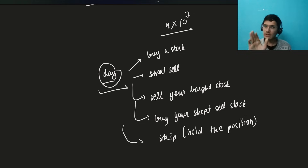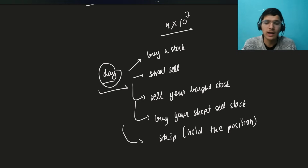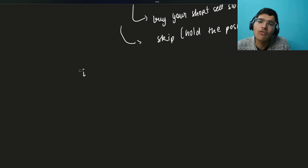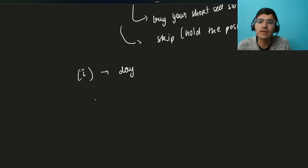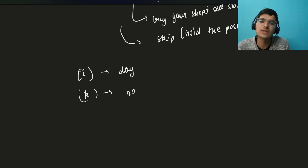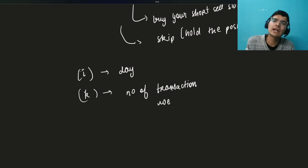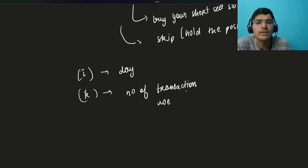Whenever you see these kinds of choices, it's very easy to convert this into a DP problem. Let's talk about the states and transitions. I will mention state I — this is the index we are currently at, the day. We also require K, which is the number of transactions we have left. We will do it recursively.